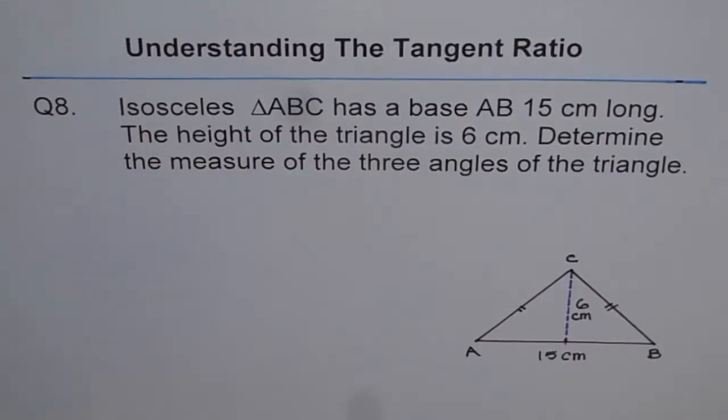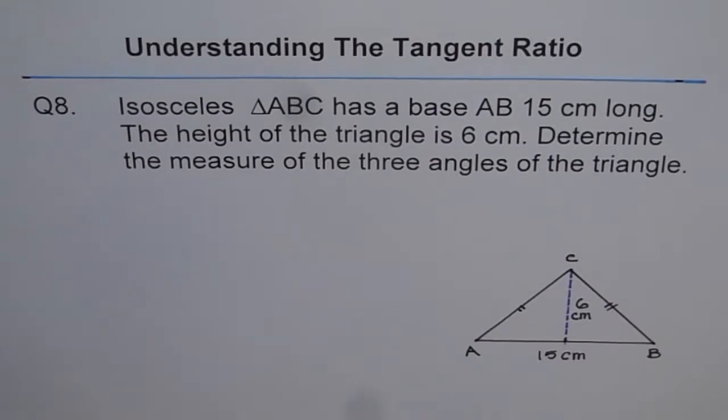Understanding the Tangent Ratio. Question 8. Isosceles Triangle ABC has a base AB 15 cm long. The height of the triangle is 6 cm. Determine the measure of the three angles of the triangle.